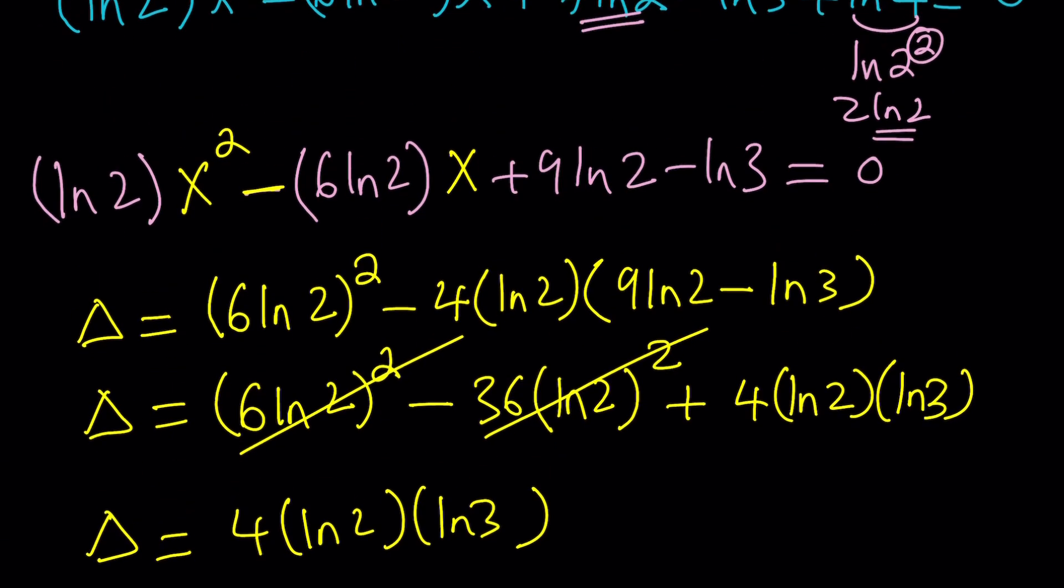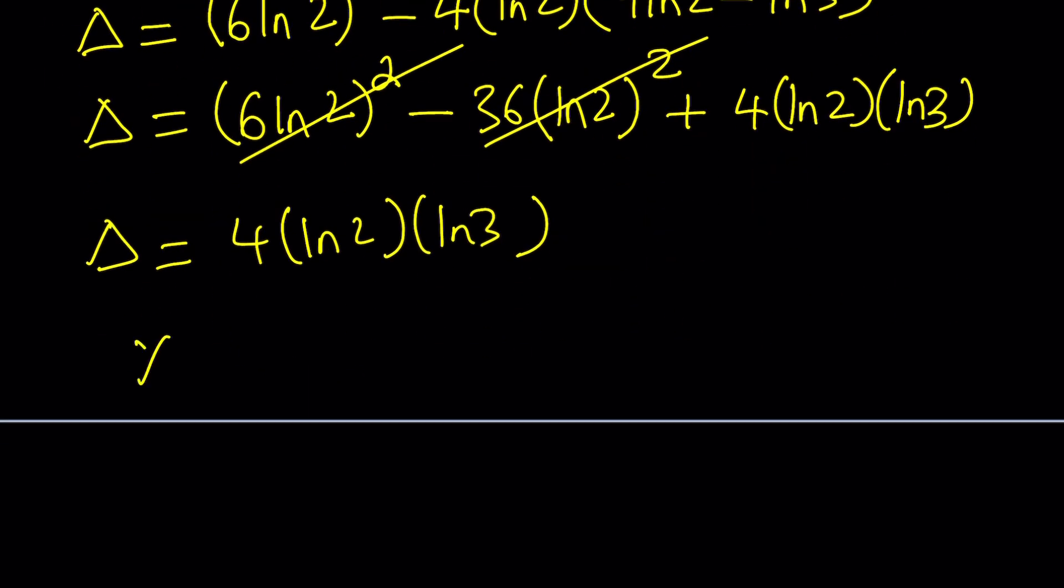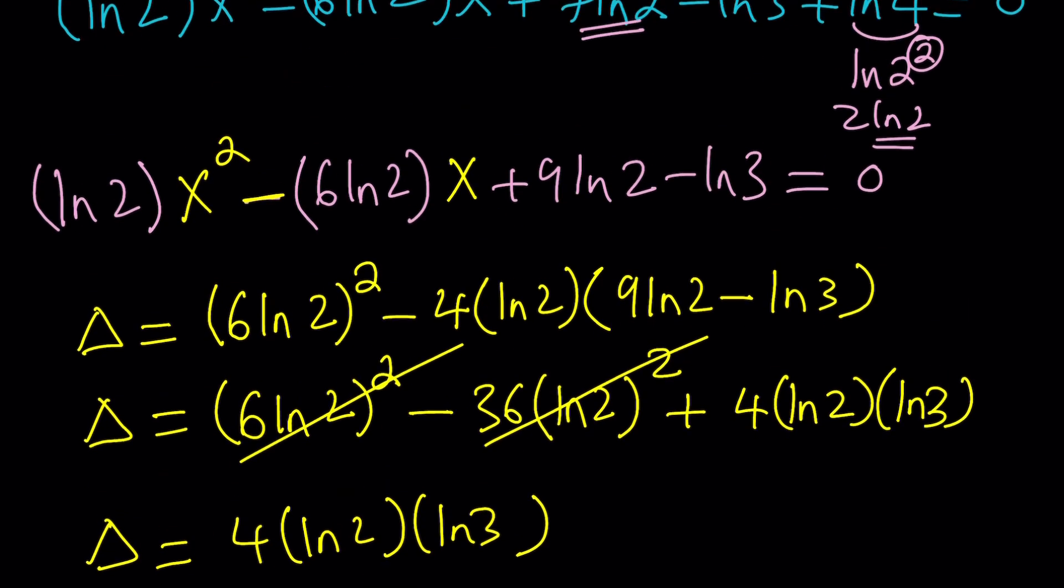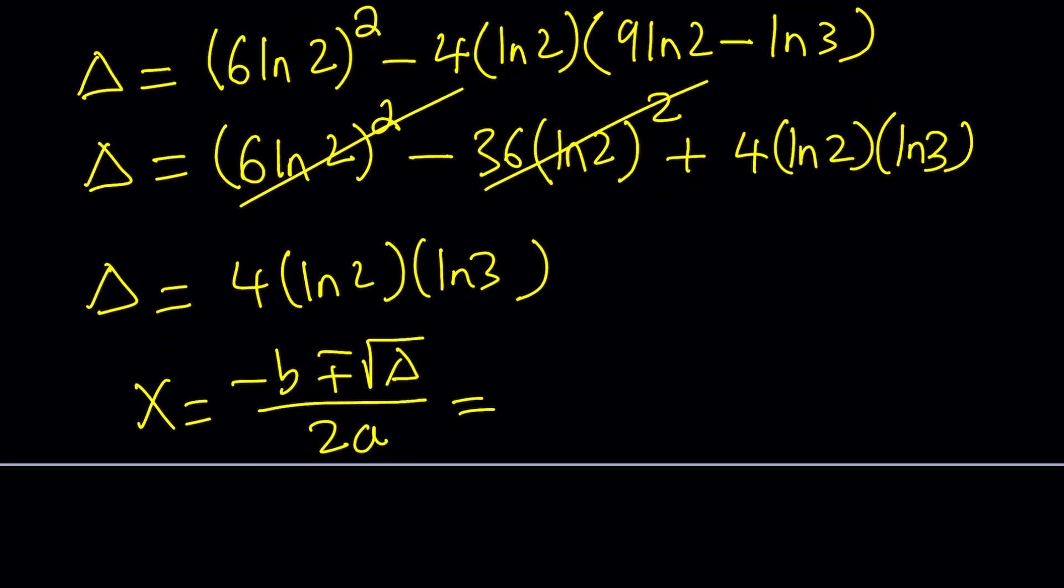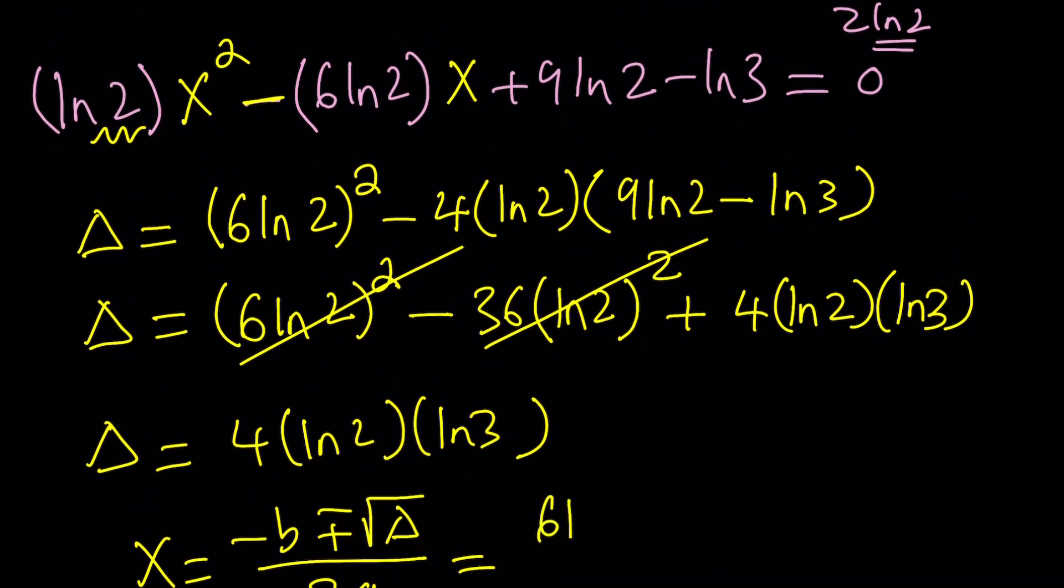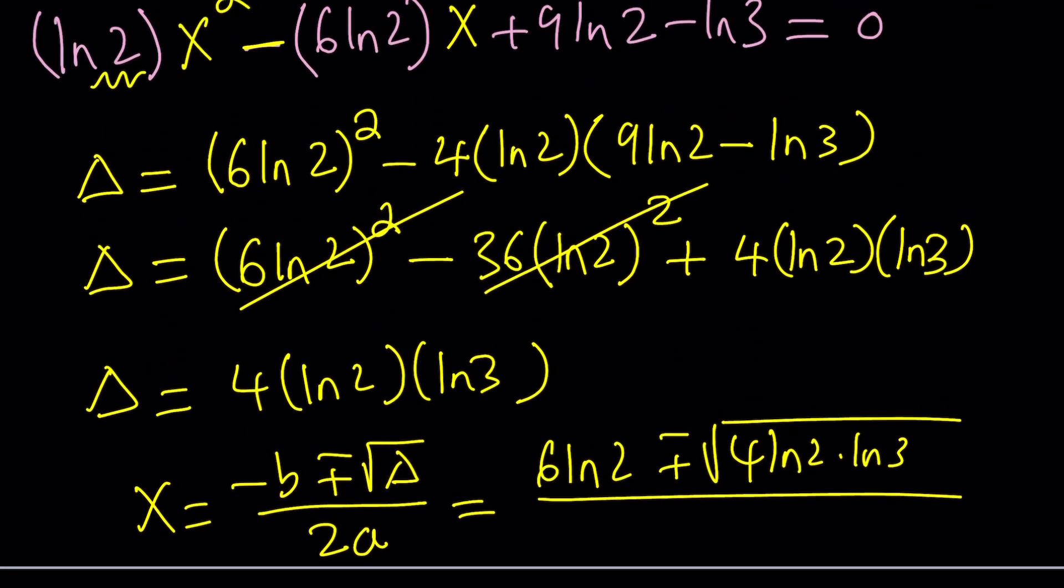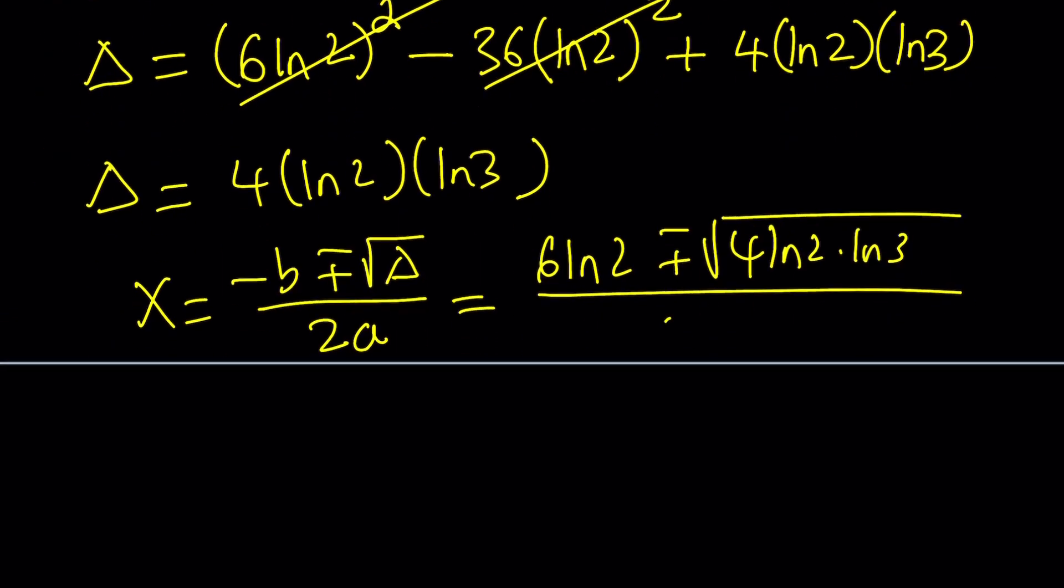And then what can we do after this? We can plug it into our equation. Let's write the quadratic formula: negative b plus minus the square root of b squared minus 4ac which is the square root of delta divided by 2a. What is b? What is a? a is the coefficient of x squared, b is the coefficient of x. So negative b is going to be 6 ln 2 plus minus the square root of 4 ln 2 times ln 3, divided by 2a which is 2 times ln 2.